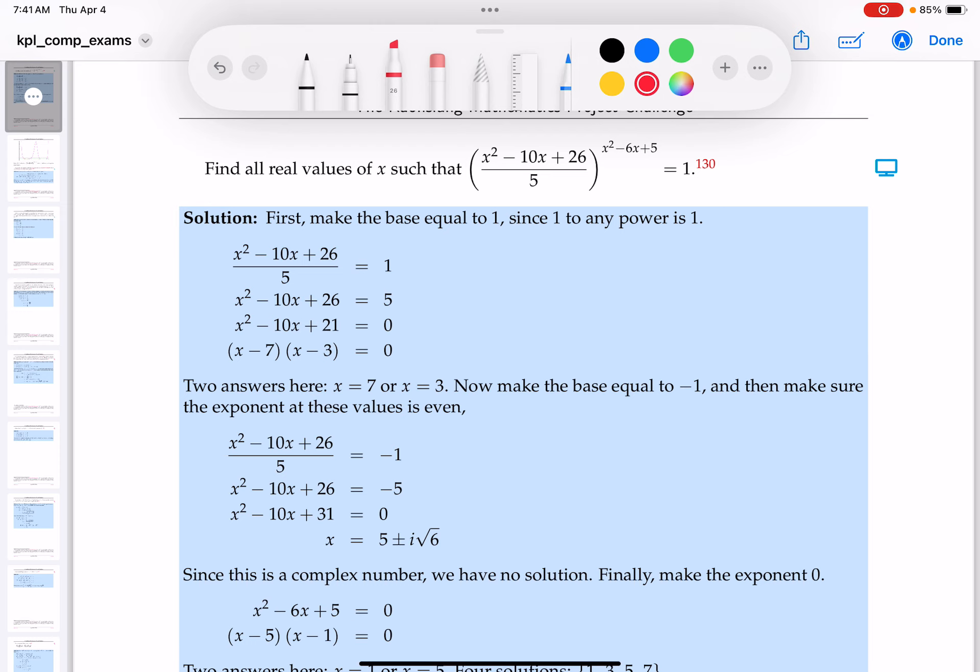So what I would basically probably do is just make the base equal to 1, because 1 to any power is going to be 1. So is it easy to make the base equal to 1? It's fairly easy. You just set it equal to 1. You write this down: x² - 10x + 26 over 5, that equals 1.